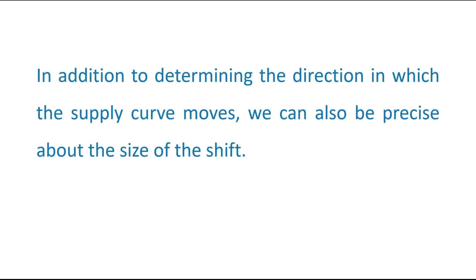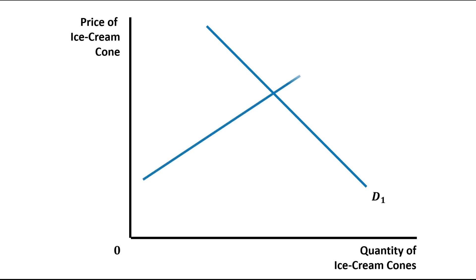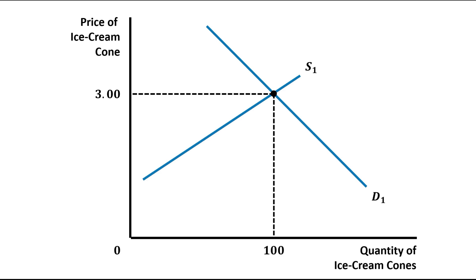In addition to determining the direction in which the supply curve moves, we can also be precise about the size of the shift. We can understand this from the figure. On the vertical axis we have taken price of ice cream cone, and on the horizontal axis we have taken quantity of ice cream cones. This is the initial demand curve D1 and this is the initial supply curve S1. Their intersection point is the equilibrium point. Equilibrium price is assumed as $3 and equilibrium quantity is assumed as 100 ice cream cones.